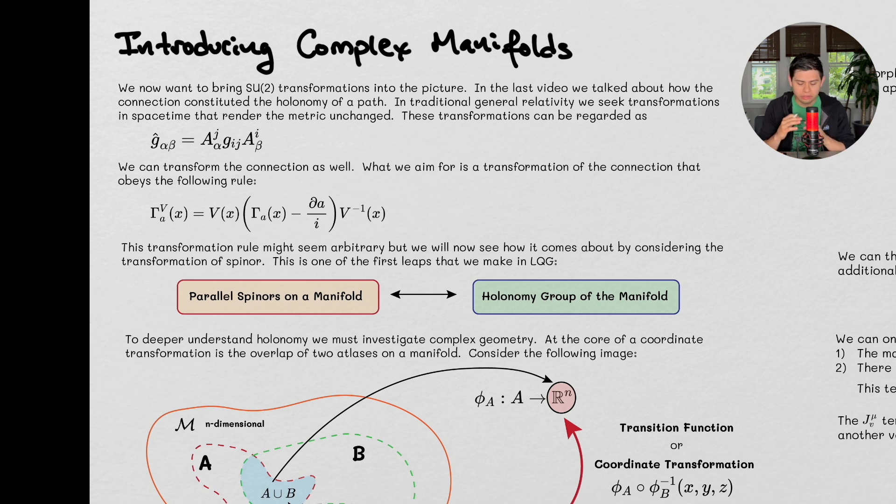Because holonomy really only makes sense when we take into consideration complex manifolds, because we want to bring SU2 transformations into this picture. SU2 transformations, those are the unitary transformations, those are the things responsible for rotating spinors on some complex manifold.